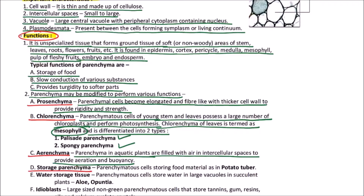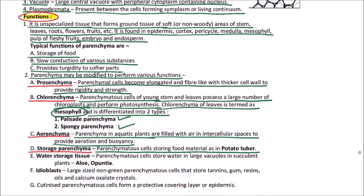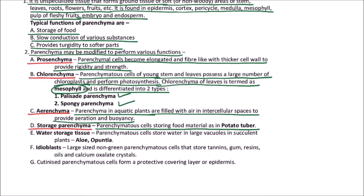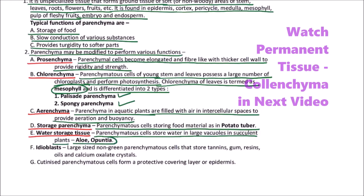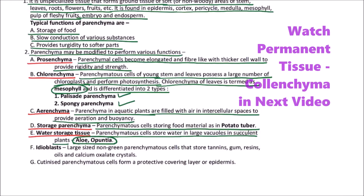Next is storage parenchyma. Parenchyma cells storing food material, as seen in the potato tuber, are termed storage parenchyma. Water storage tissue: in succulent plants such as xerophytes, parenchyma cells store water in large vacuoles — for example in plants like aloe, Opuntia, etc.